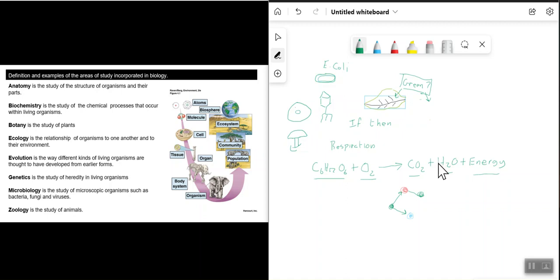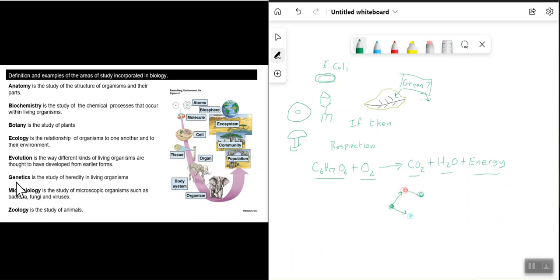Another major area within biology is zoology — the study of animals such as lions, tigers, and elephants. These are the different sections that biologists work in. There are different types of biologists working in all of these different areas.